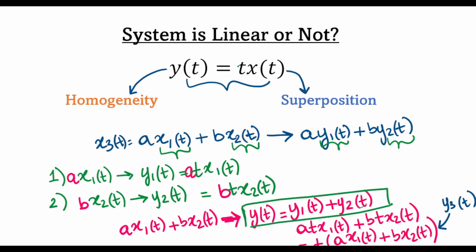This proves that the system y(t) = t·x(t) is indeed linear, because it conforms to the principles of homogeneity and superposition. That's it for today's lecture — I hope you found it useful. Stay tuned to my channel for more content related to signals and systems, and I'll see you again in another lecture. Bye.